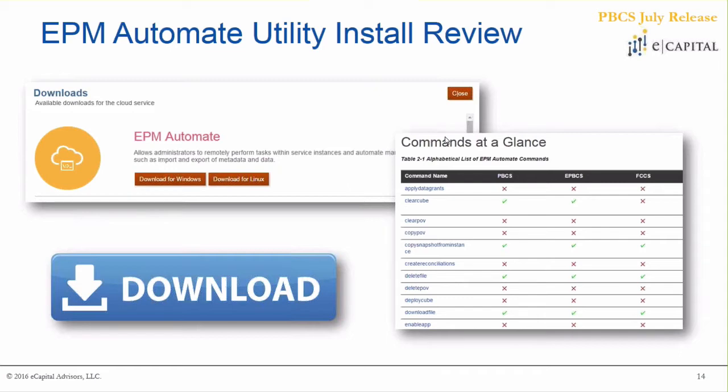Just a reminder: if you're logged into the simplified interface, where your username is on the top right, if you drop that arrow down you'll see a downloads button. That's probably the easiest way to download EPM Automate in the newest versions. They also have Smart View and the predictive planning utility there, so if you ever want to download anything related to PBCS or EPBCS that's the most efficient way. Through that interface they have an option for Windows and Linux.